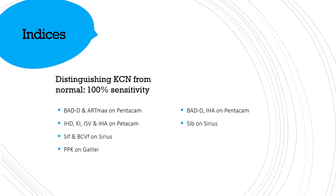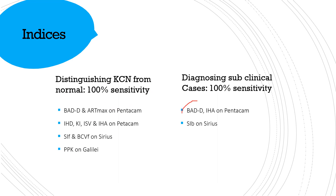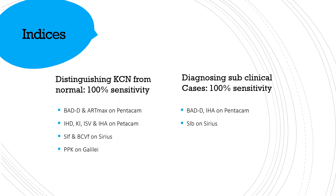For the subclinical cases, BADD and IHA on the Pentacam, and SIB on the Cirrus, have 100% sensitivity for distinguishing subclinical cases from clinical cases. So as a whole, these indices are very important and very reliable — we need to understand them in detail.